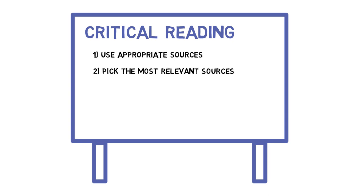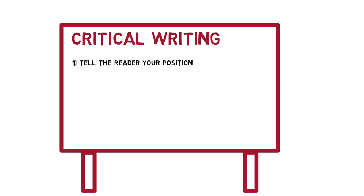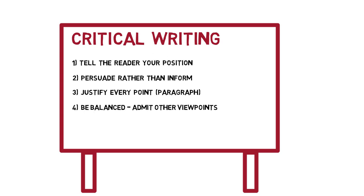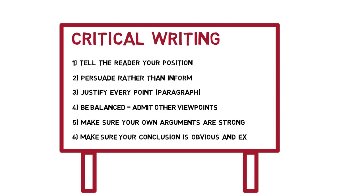To summarize: Read critically by making sure your sources are appropriate and relevant. Read with a healthy skepticism, deciding if you think the writer's arguments are strong. You should then be able to decide your own position on the issue. Start your writing by stating your position. Try to convince your reader that this is the best position by persuading rather than informing. Justify every paragraph by helping the reader understand how each point relates to your overall argument. Make sure you are balanced, acknowledging other viewpoints but arguing your own. Be critical about your own arguments. Make sure they will stand up to scrutiny. And make sure your points all lead to a natural and expected conclusion.